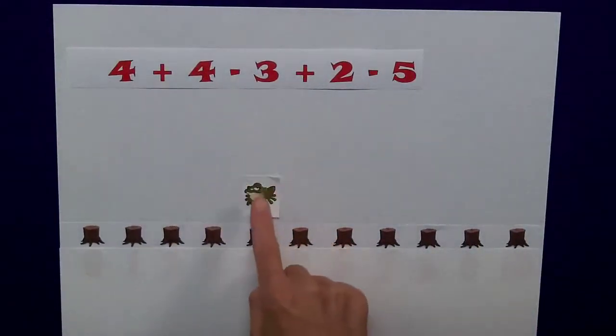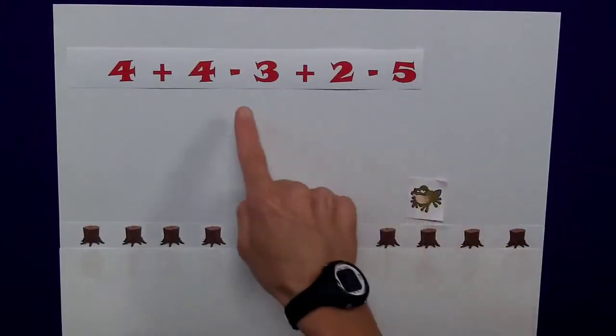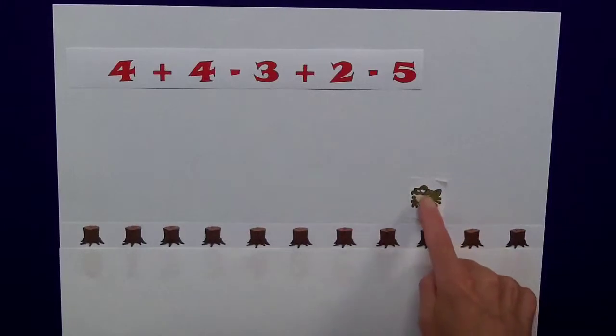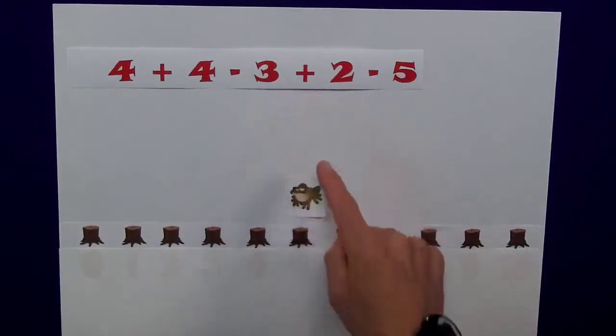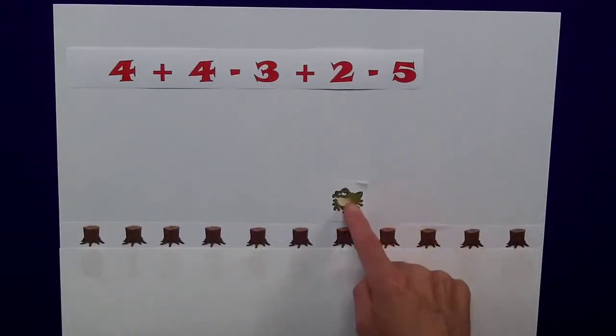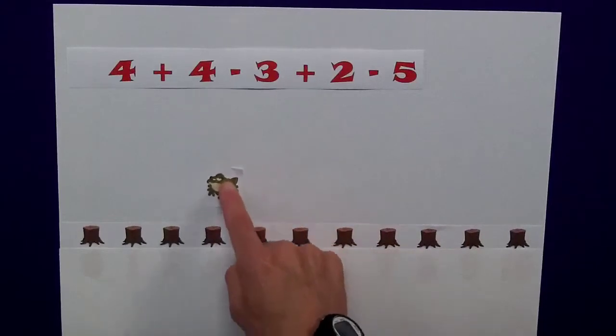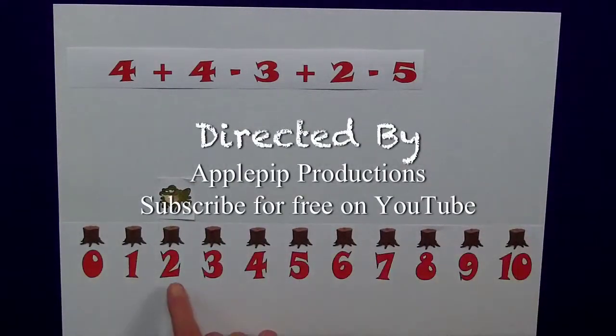So, he's jumping up the number line 4, 1, 2, 3, 4, now subtraction. So, down 3, 1, 2, 3, up 2, 1, 2, and finally down 5, 1, 2, 3, 4, 5. And the answer to the question, he finishes at 2.